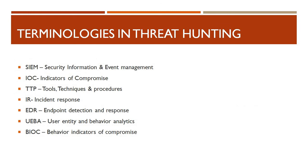The key terminologies used in threat hunting are: SIEM (Security Information and Event Management), Indicators of Compromise (IOC), TTP (Tools, Techniques, and Procedures — also called Tactics, Techniques, and Procedures), IR (Incident Response), EDR (Endpoint Detection and Response), UEBA (User Entity and Behavior Analytics), and Behavioral Indicators of Compromise. Make sure you are familiar with all these terms.